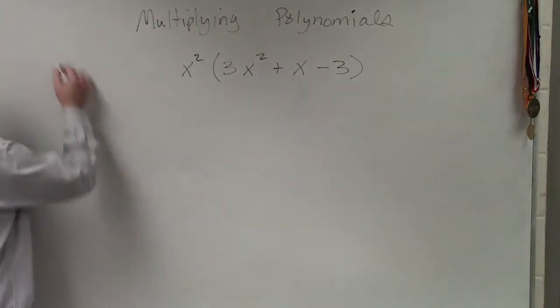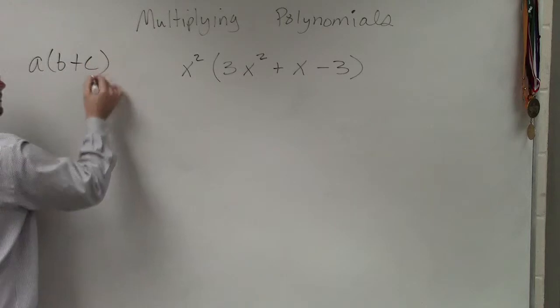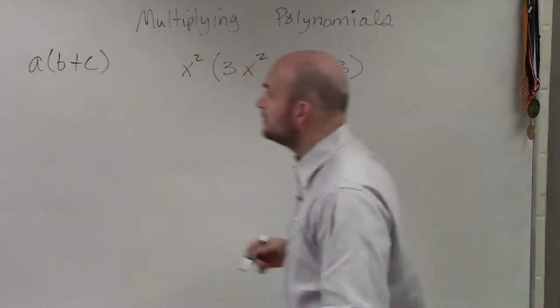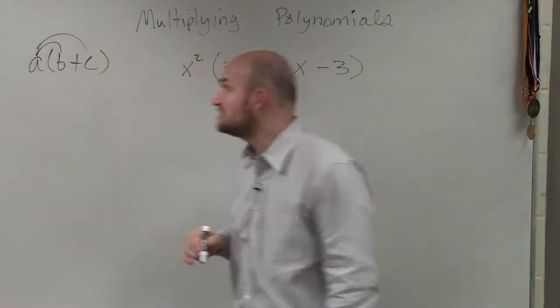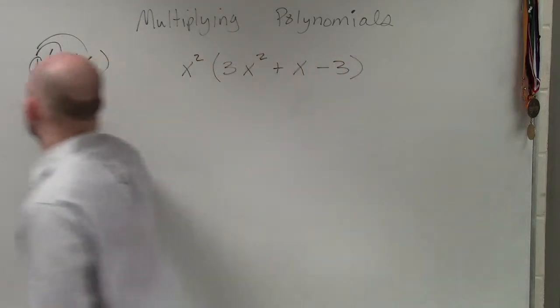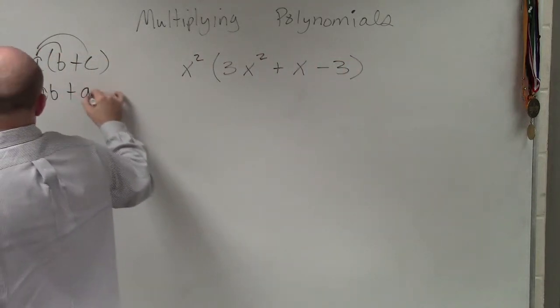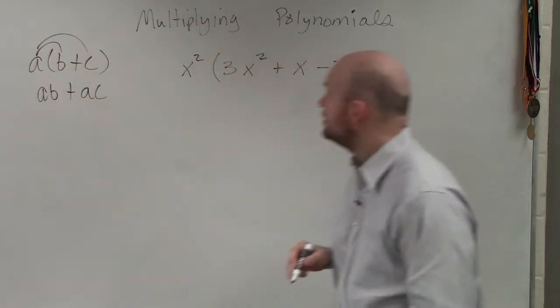The distributive property basically states when you have a term outside of parentheses, you're going to multiply that term times both of your terms inside of the parentheses. So you'd have AB plus AC. So in this case,